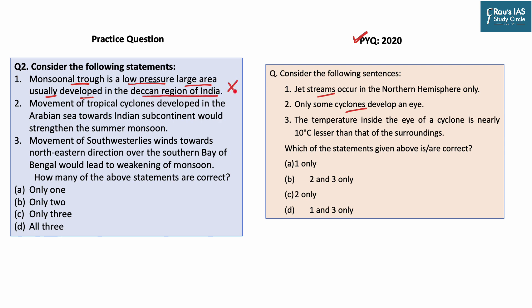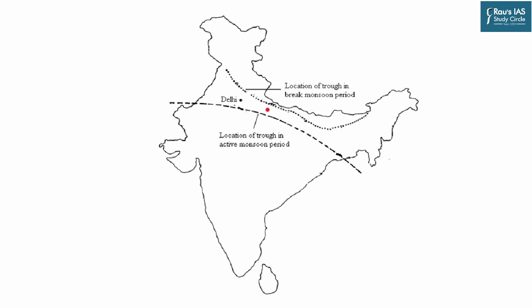This statement is incorrect. Monsoonal trough is a low pressure area, and low pressure is inversely related to high temperature. In the months of May, June, and July, the temperature in the northern part of India is very high, hence there will be low pressure — and this low pressure is called the monsoonal trough. As you can see, this large or elongated dotted line showcases the monsoonal trough. Hence it is in the northern plains and not in the Deccan region. So the first statement is incorrect.